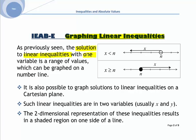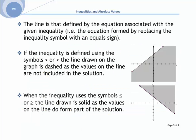As previously seen, the solution to linear inequalities with one variable is a range of values which can be graphed on a number line. It is also possible to graph solutions to linear inequalities on a Cartesian plane. Such linear inequalities are in two variables, usually x and y. The two-dimensional representation results in a shaded region on one side of the line — the line defined by replacing the inequality symbol with an equal sign.